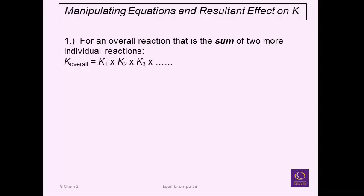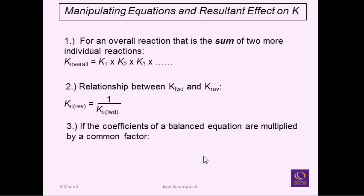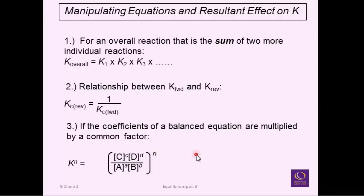Basically, if you have multiple equations that you're adding together, the K values for each of those equations multiply together. If you have a reaction running in the forward manner and you figure out the K for that, if you want to run that reaction in reverse, then K reverse is related to the inverse of K forward. The final manipulation is if you multiply through an equation by some factor, it raises K to the power of that factor — kind of reverse order of operations.